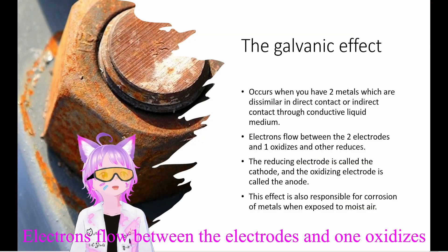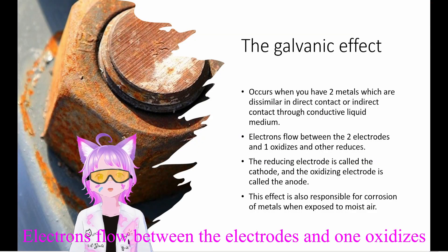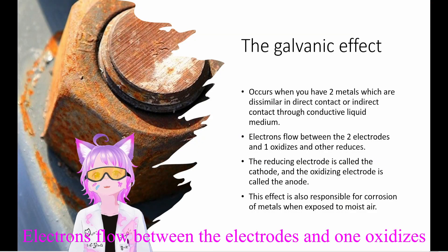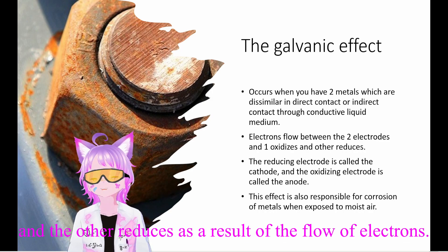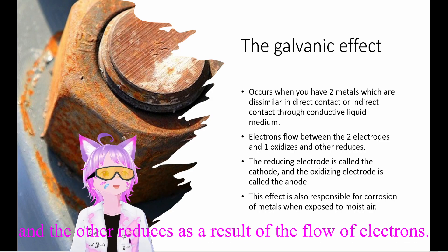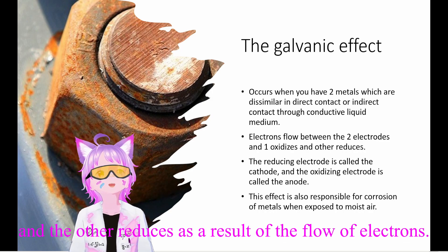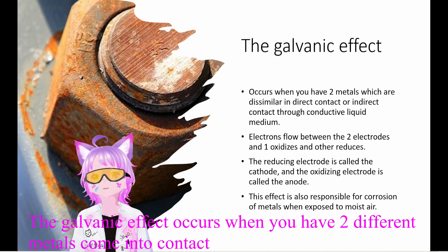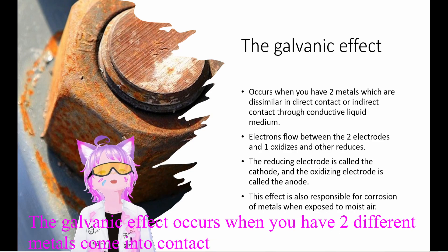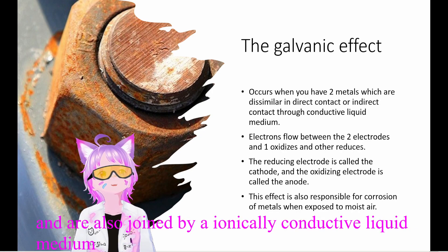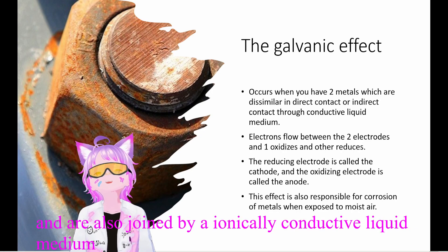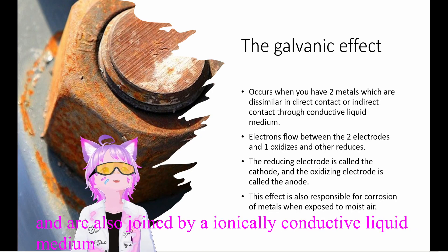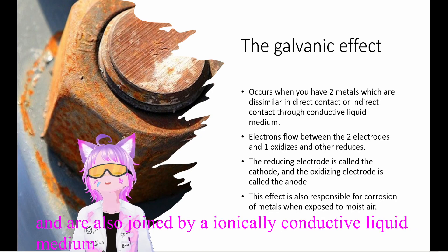Electrons flow between the electrodes, and one of them oxidizes and the other reduces — the result of the flow of electrons. The galvanic effect occurs when you have two different metals come into contact and are also joined by an ionically-conducted medium.